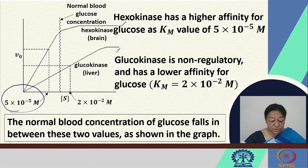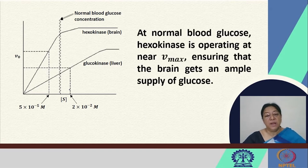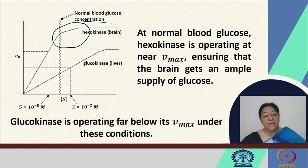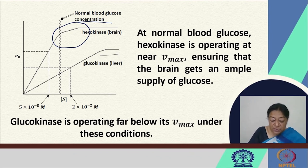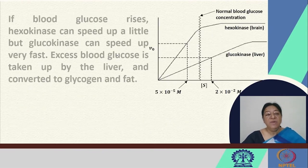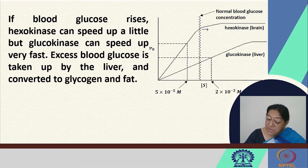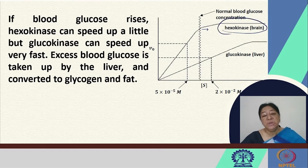The normal blood level concentration falls in between these two Km values. When we have normal blood glucose, hexokinase is therefore operating at near Vmax, and this ensures that the brain gets an ample supply of glucose. However, glucokinase is operating far below its Vmax under these conditions, as is apparent from the values shown — here is the normal glucose level, and that is the Vmax of glucokinase.